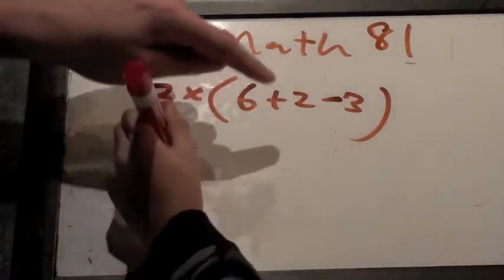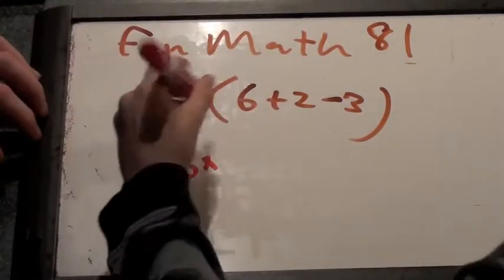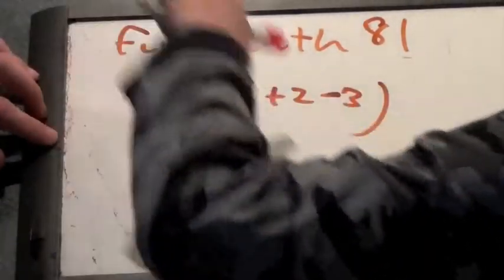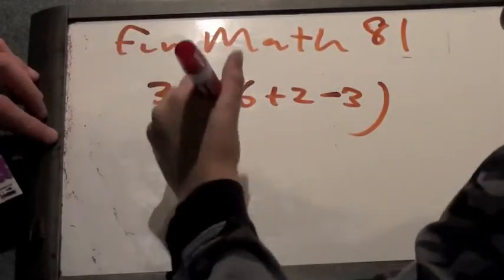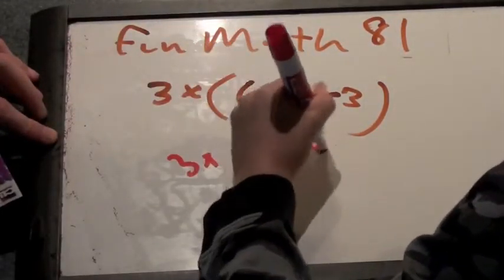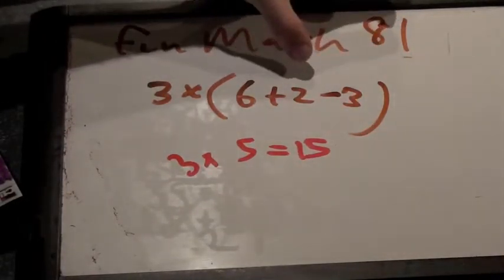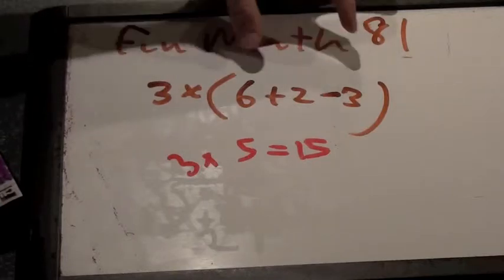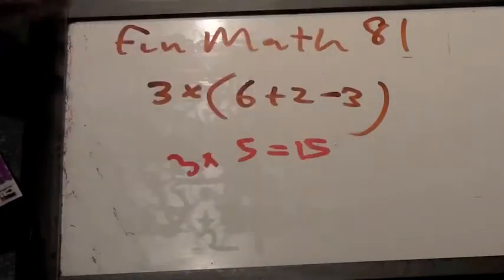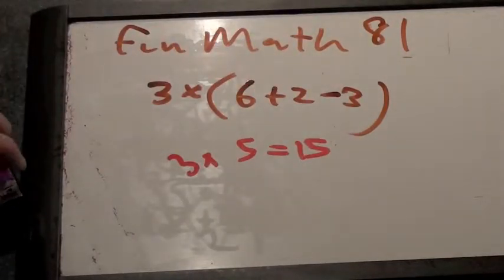Okay, so write it as 3 times 5, please. So this is the same as inside the parentheses, 6 plus 2, which is 8, minus 3, which is 5. So this is the same as 3 times 5, which is otherwise known as? Fifteen. Fifteen. Okay.